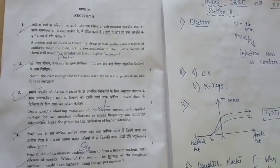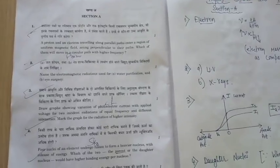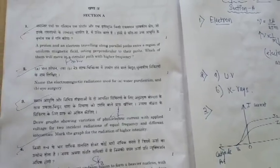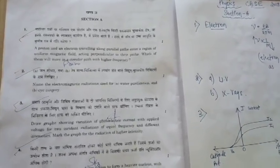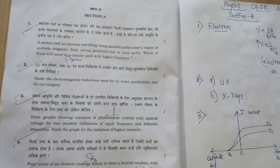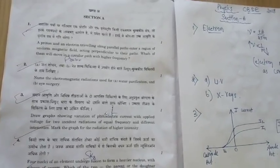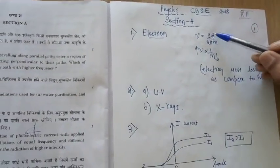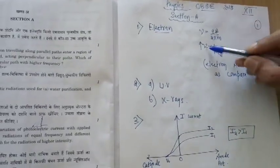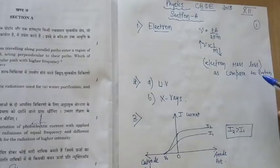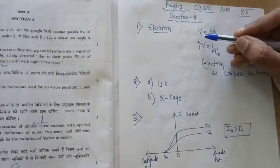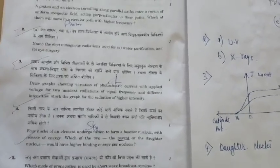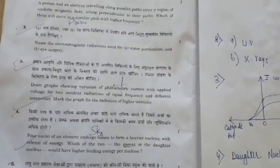We will start with Section A. Question 1: a proton and electron travel in a magnetic field — which one moves in a circular path with higher frequency? The answer is electron, because frequency equals qB divided by 2πm, so frequency is inversely proportional to mass. Since the mass of an electron is less than that of a proton, the electron has a higher frequency.